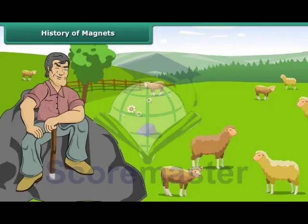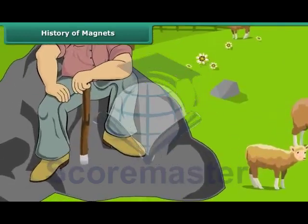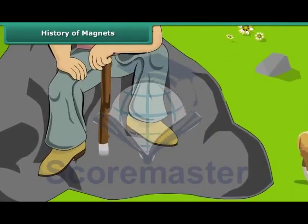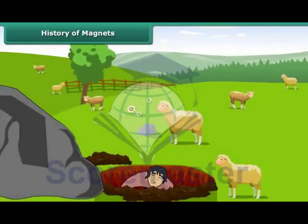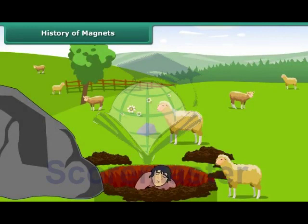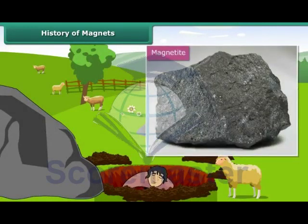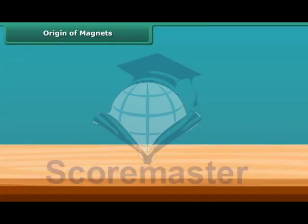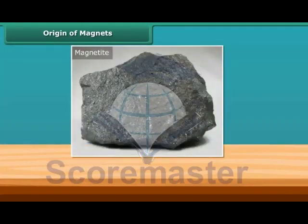Suddenly, the metal tip of his stick became firmly stuck to a large black rock on which he was sitting. To find the source of attraction, he dug up the earth to find magnetite, a natural magnetic material. This type of rock was subsequently named magnetite, which was named after Magnus himself.